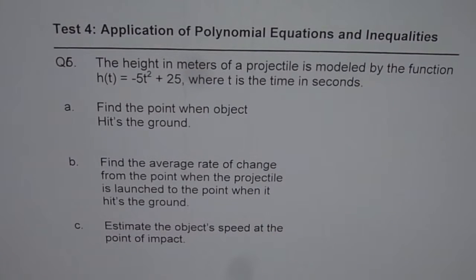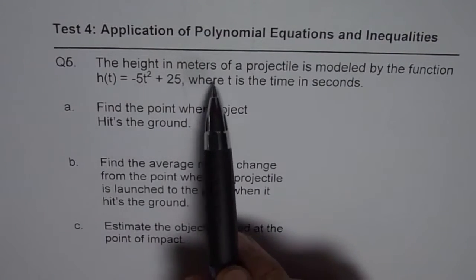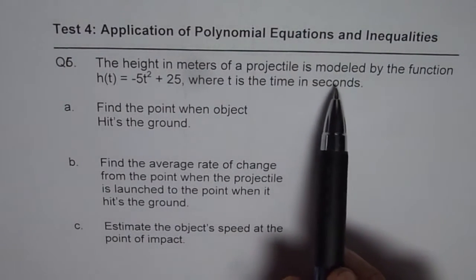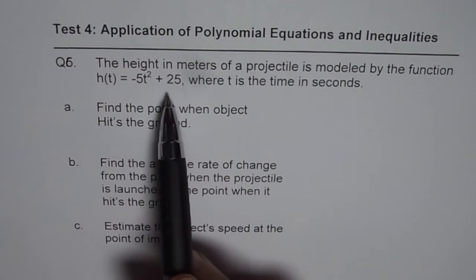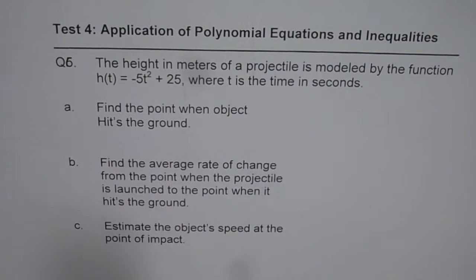The question is: the height in meters of a projectile is modeled by the function h(t) = -5t² + 25, where t is the time in seconds.